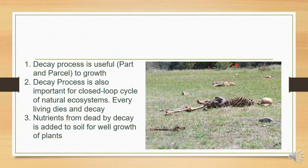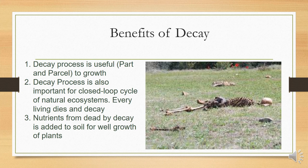Now, if the bodies are not decomposed, there will be huge remains on the surface of the earth if there is no decomposition. So the decay process is useful, as it is part and parcel to growth. Decay process is also important for the closed loop cycle of the natural ecosystem. Every living thing dies and decays. Nutrients from the dead body, released by decay, are added to the soil for the well growth of plants. This is the usefulness of the decay system of microbes.